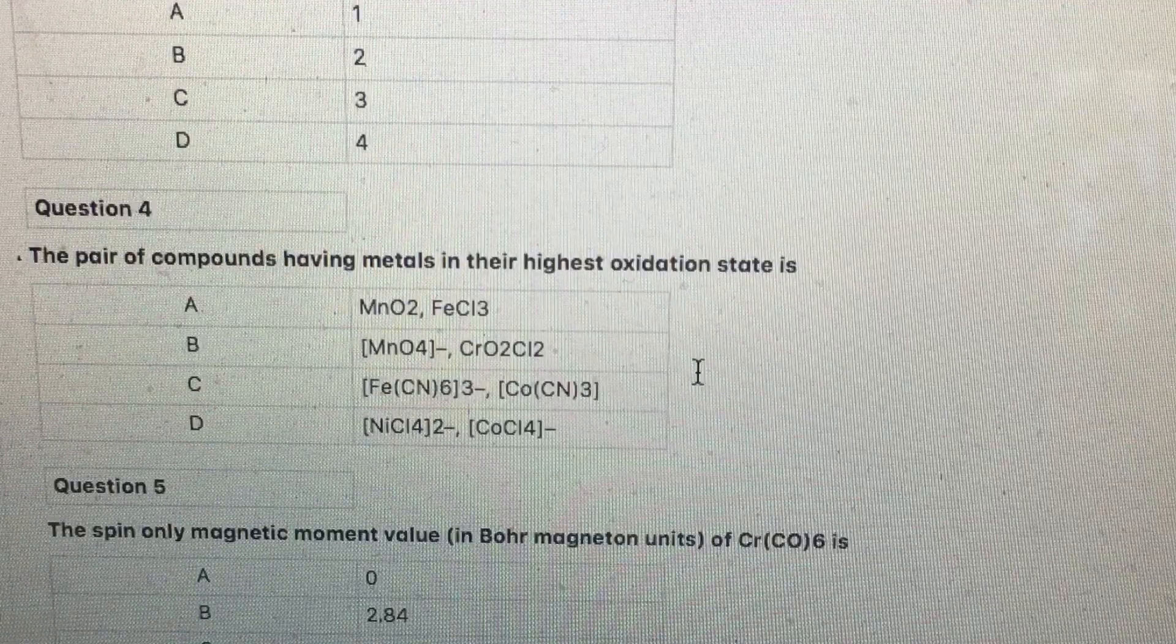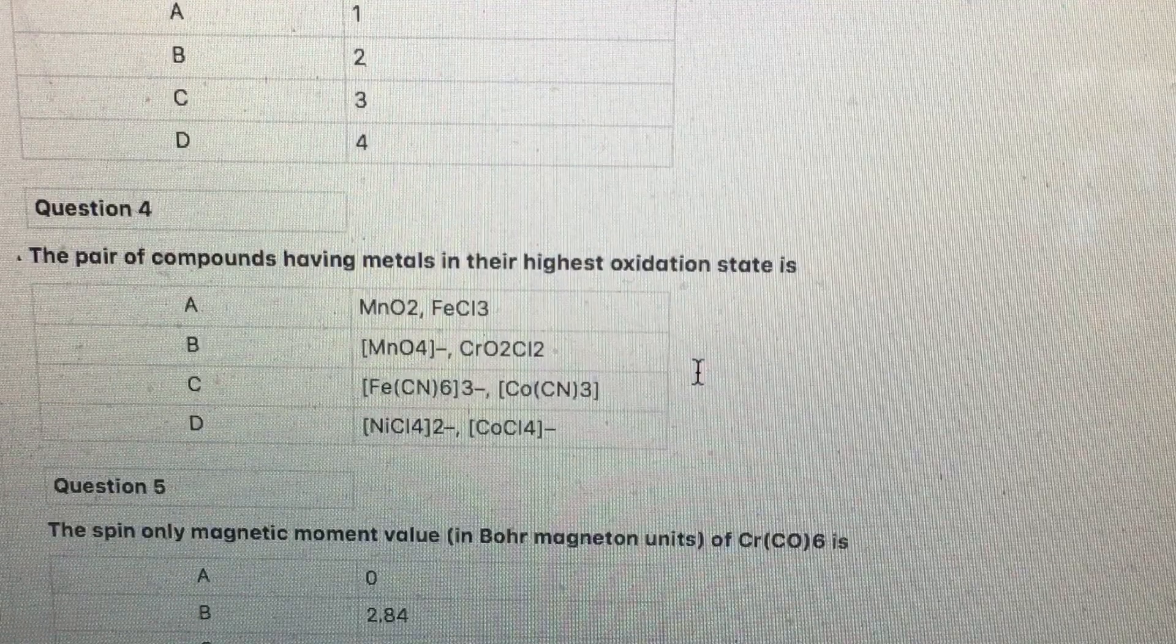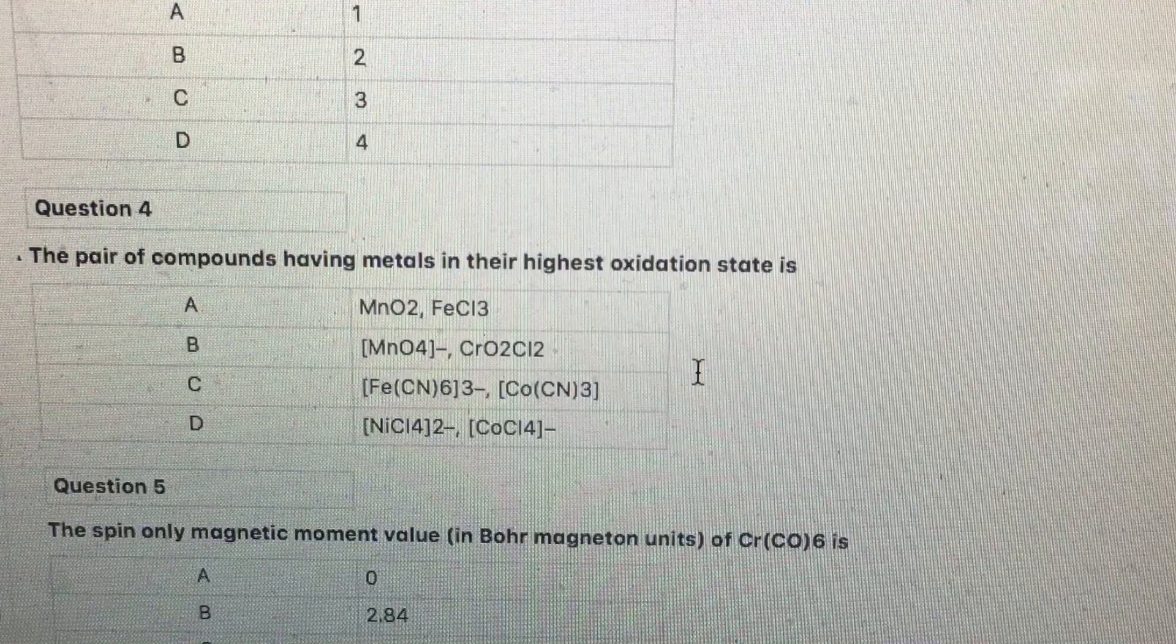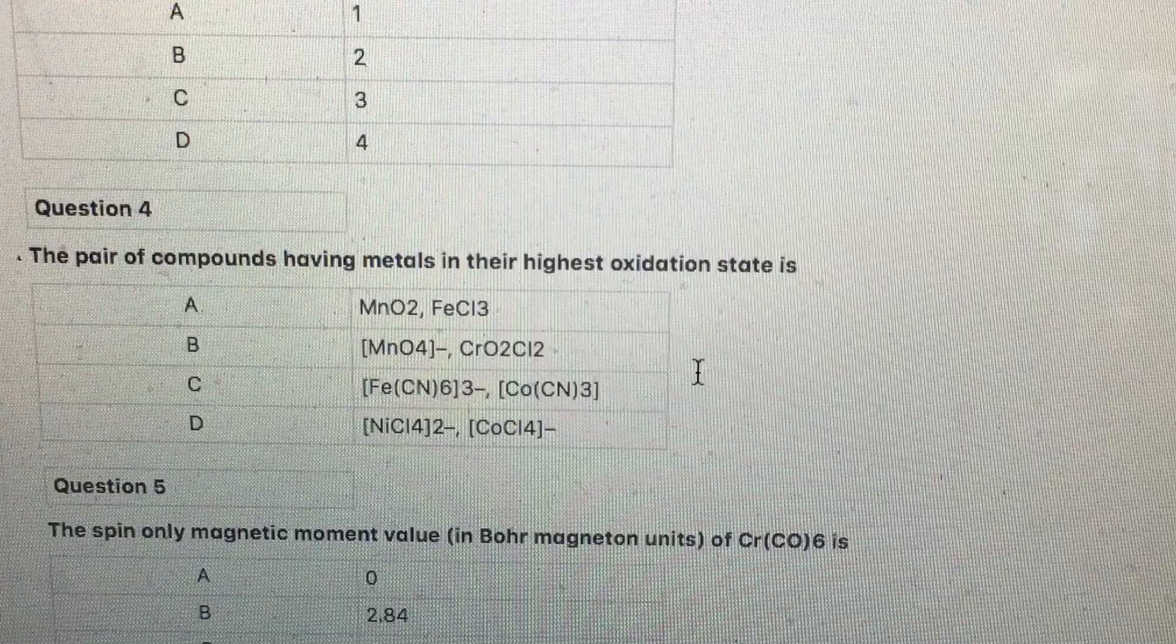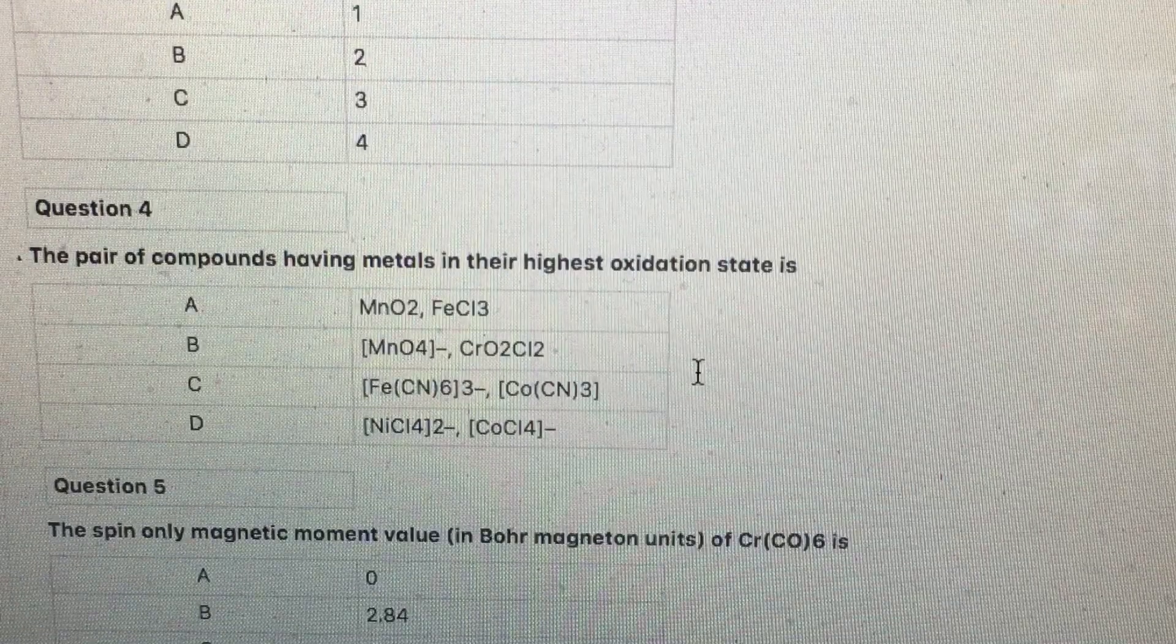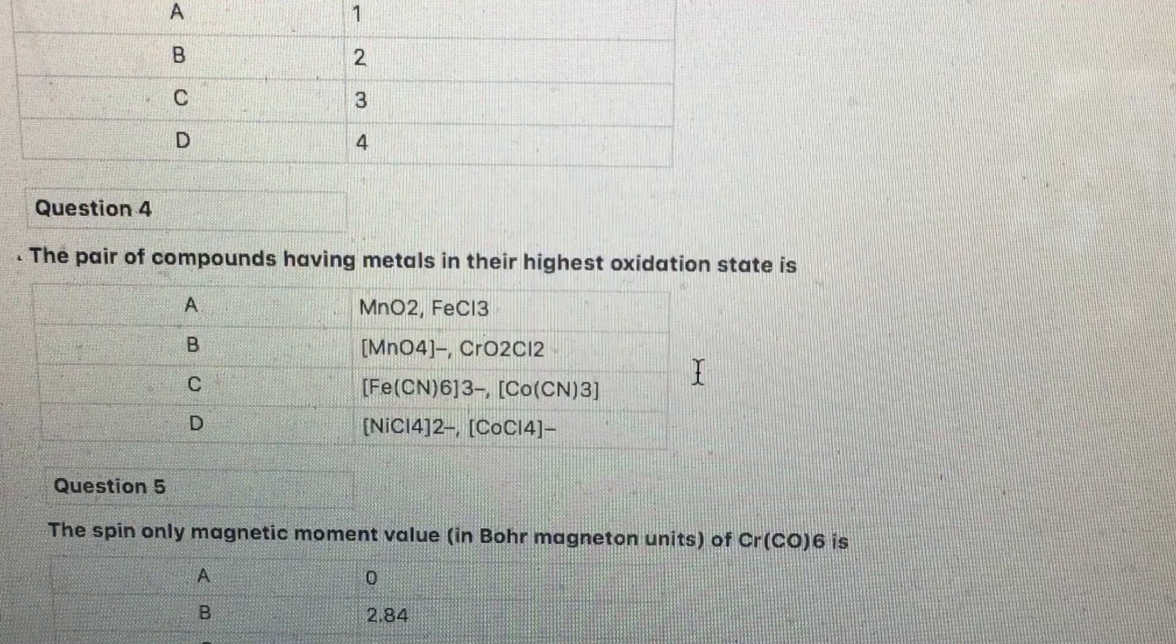Do you know that in permanganate ion and chromium chloride, the central metal has no unpaired electrons, but they are beautifully colored. The color of these ions, which do not have any unpaired electrons, is due to charge transfer phenomena. Permanganate is deep violet in color, chromium chloride is reddish brown.